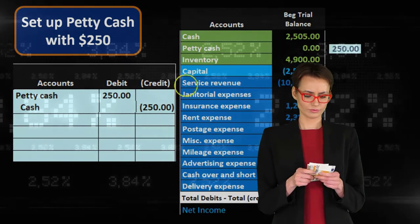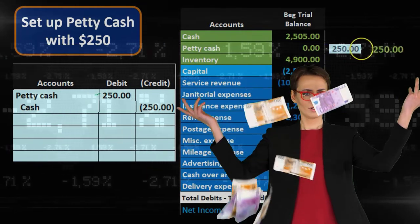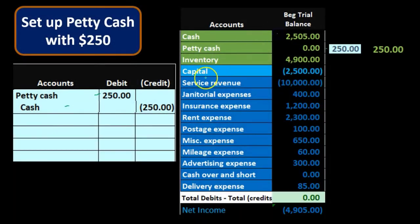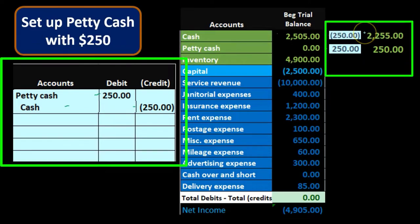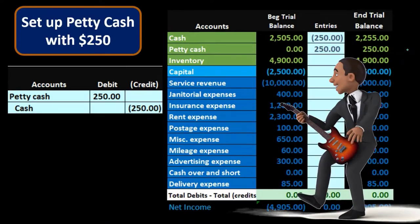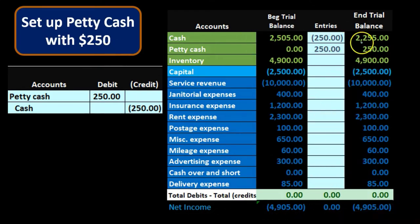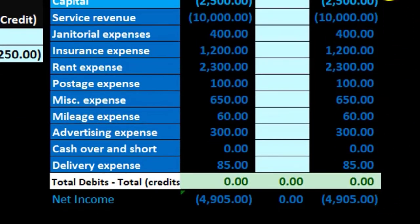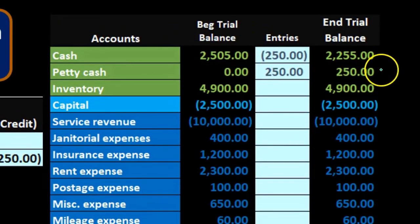Posting this out to our worksheet, petty cash goes from zero up in the debit direction to $250. The cash account goes from $2,205 down in the credit direction to $1,955. We just lowered the cash account and set up the petty cash — pretty straightforward. If we pull over all the other accounts we're still in balance, still at a zero balance here. No effect on net income — we're just moving cash from the checking account into petty cash.